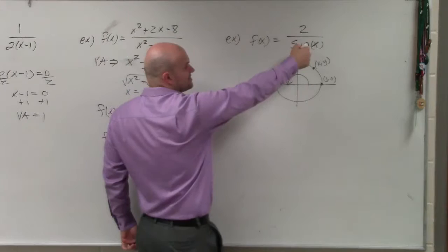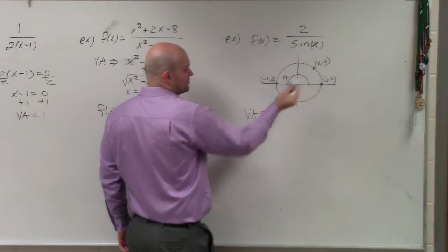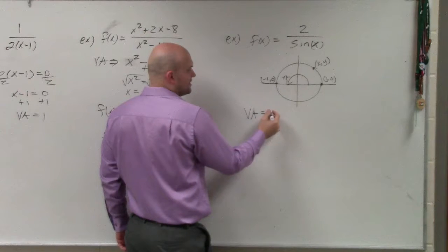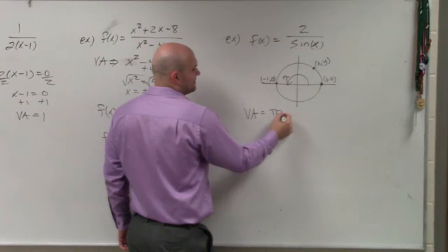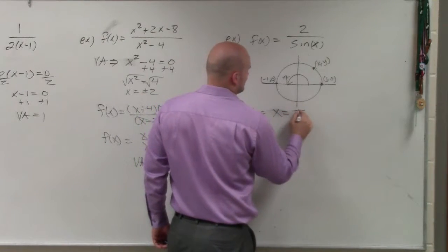So I know that all the values that I'm going to make is 0. My vertical asymptote is equal to, I'm not going to say 0, because what I'm just going to do is pi n. I'm sorry. X equals pi n.